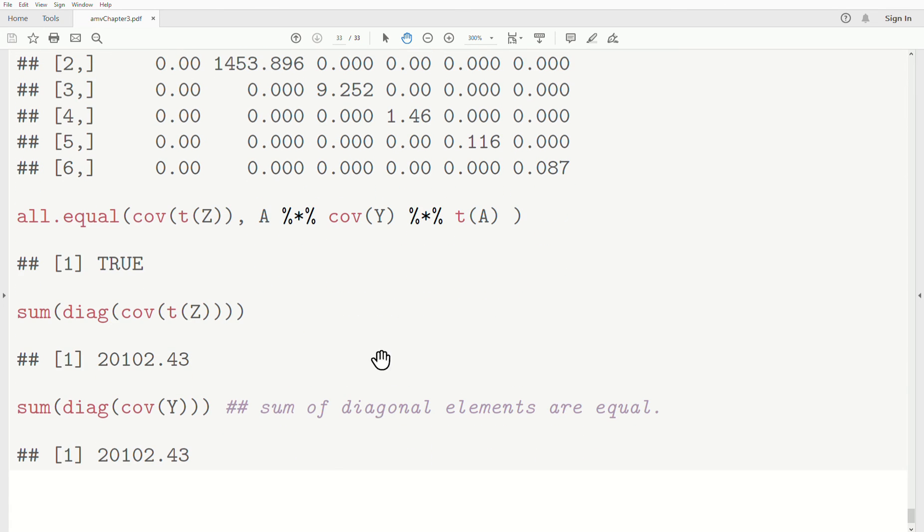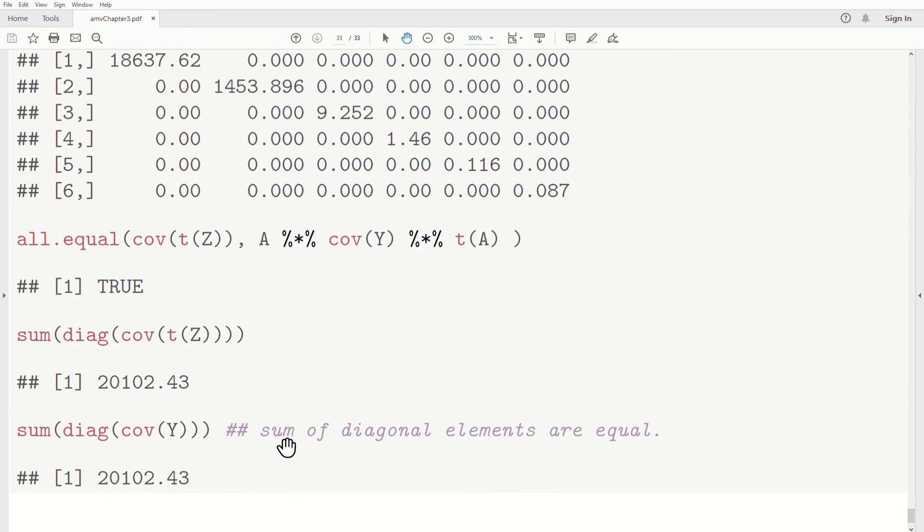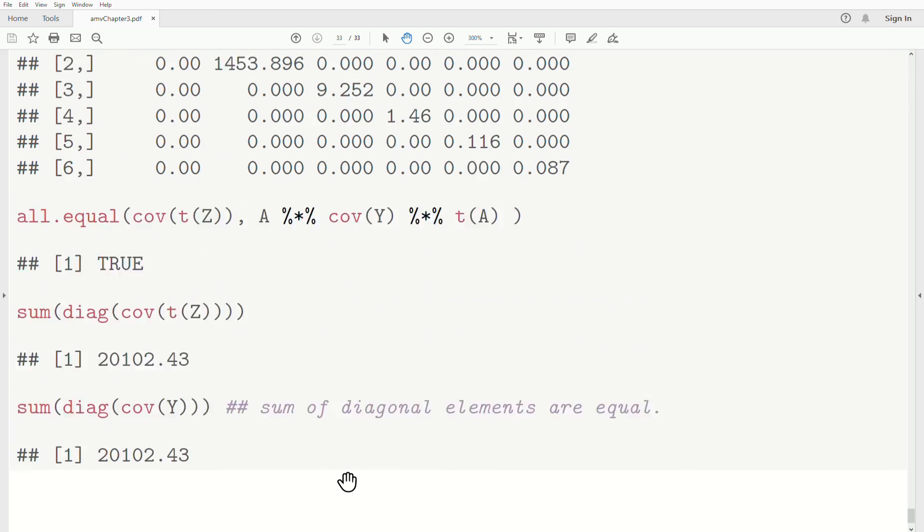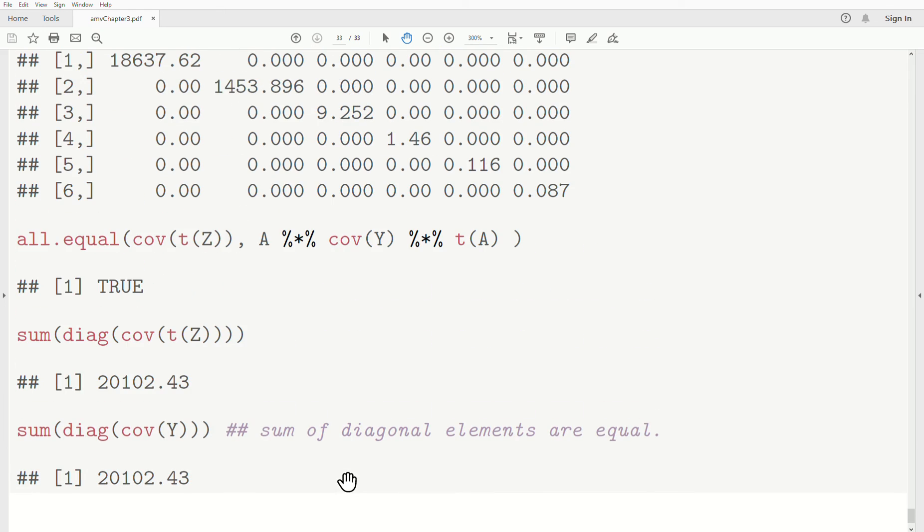Another note, which we will look more at in later videos. If we look at the trace of Z, we get 2102. But if we look at the trace of Y, it's the same. So the sum of the diagonal elements are equal. That's quite interesting to me. We'll explore that in later videos.